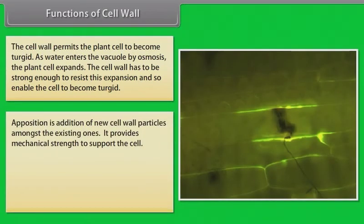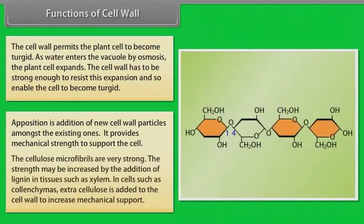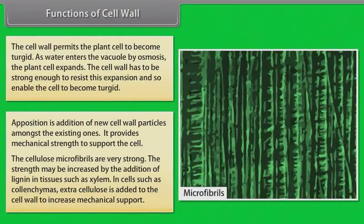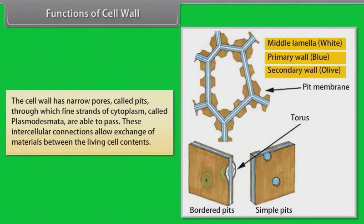Plasmodesmata connections help in movement of substances between cells; cells connected by plasmodesmata form a system called symplast. Apposition is the addition of new cell wall particles amongst the existing ones and provides mechanical strength to support the cell. The cellulose microfibrils are very strong; the strength may be increased by the addition of lignin in tissues such as xylem. In cells such as collenchyma, extra cellulose is added to the cell wall to increase mechanical support. The cell wall has narrow pores called pits through which fine strands of cytoplasm called plasmodesmata are able to pass, allowing exchange of materials between the living cell contents.